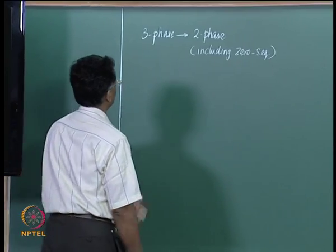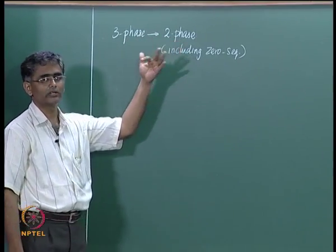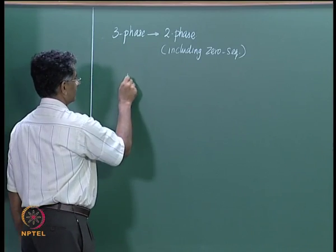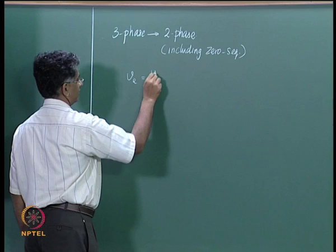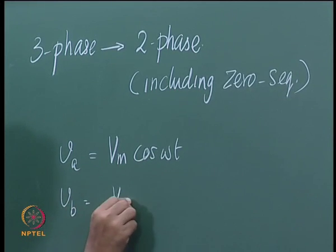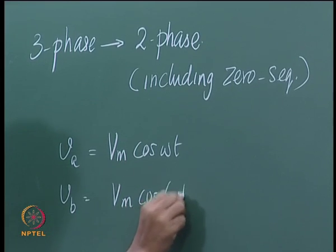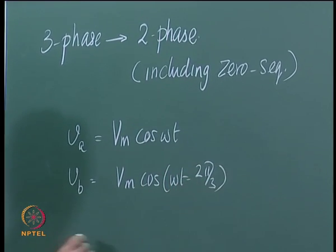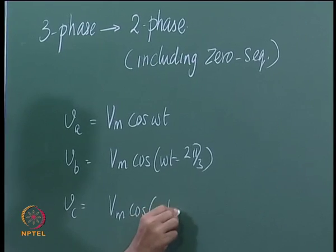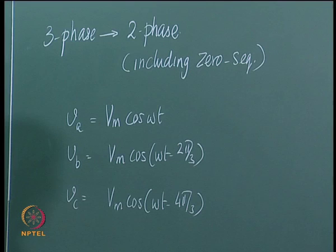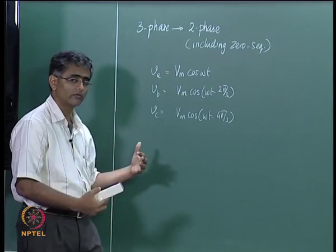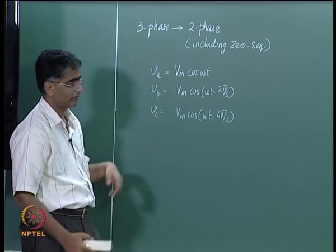Let us look at the input variables themselves. In the three-phase case you have three inputs: Va = Vm·cos(ωt), Vb = Vm·cos(ωt − 2π/3), and Vc = Vm·cos(ωt − 4π/3). While going from three-phase to two-phase, we are transforming all the variables from the three-phase to the two-phase reference frame.